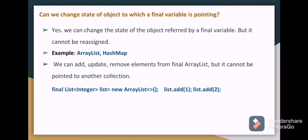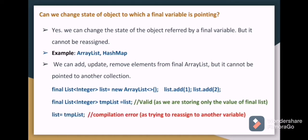Let's understand this more with the help of example. Final List integer list equal to new ArrayList - here we have taken one list and to this list we have added some values called one and two, and we have created one more list called tmpList. In this list we are storing the previously created list, so now if you see here we are just storing the value of previously created one, so this is possible. But list equal to tmpList - if we do like this here we are trying to reassign the previously created list to another variable called tmpList. This is not possible as we are trying to reassign to another variable.